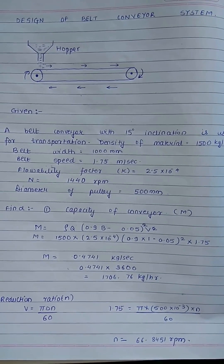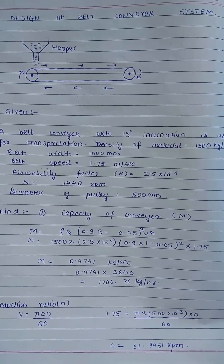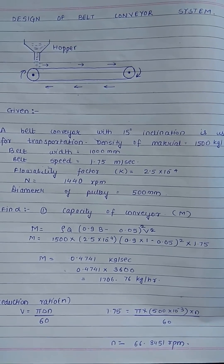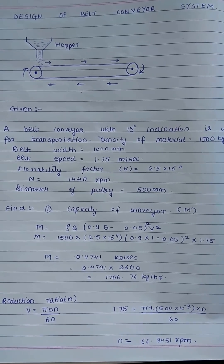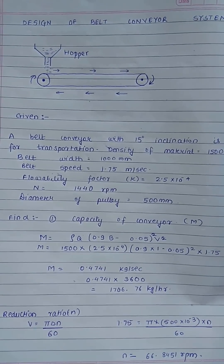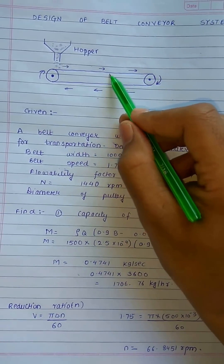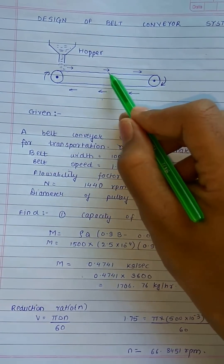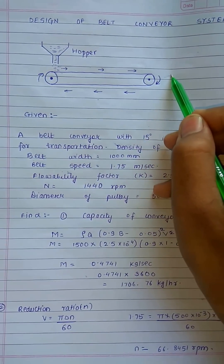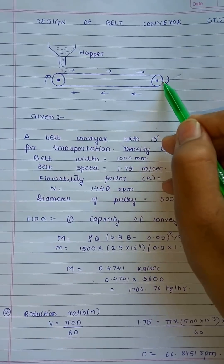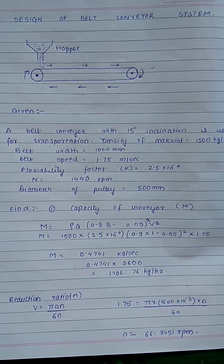Welcome back to another episode where we will be studying the design of a belt conveyor system. A conveyor is a material handling device used in many heavy duty industries for transporting material from one place to another where other logistics cannot be applied. This basic diagram shows the driving pulley, driven pulley, and the belt carrying material from the hopper endlessly over these two pulleys. We have to design certain parameters for this conveyor system.